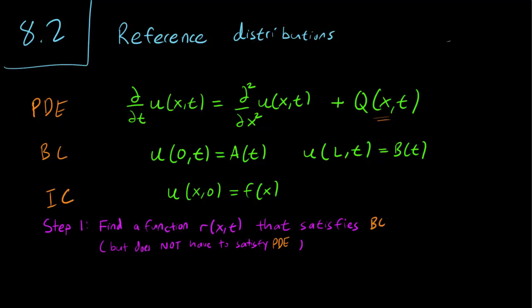The first step is to find a function, r(x,t), that satisfies the boundary conditions, but it does not have to satisfy the partial differential equation itself, so it does not have to worry about the heat equation. This r is known as the reference temperature distribution.